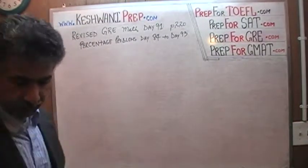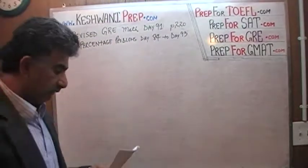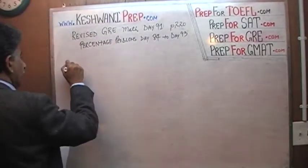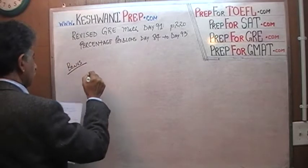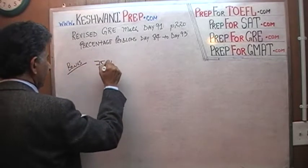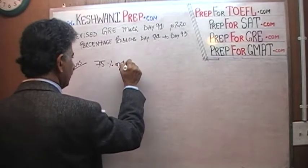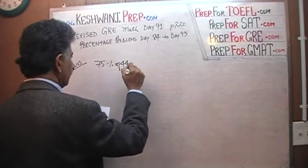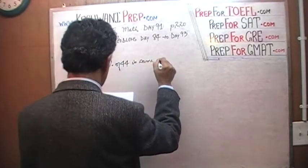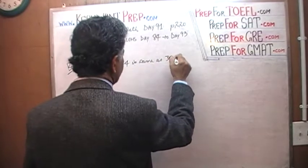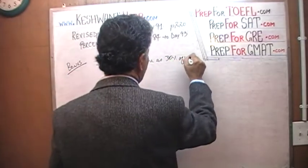The next problem that I'm going to put on the blackboard is not in the book. It is a bonus question: 75% of 44 is same as 30% of what?